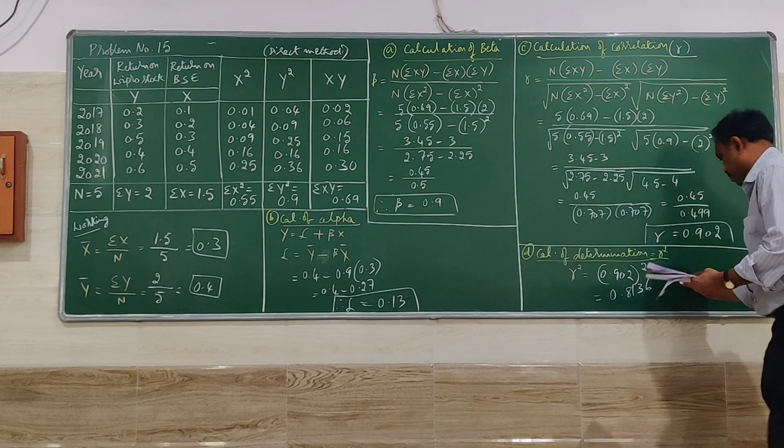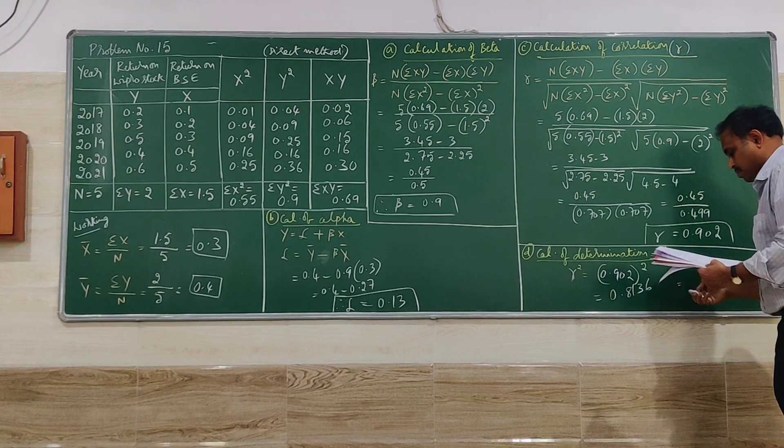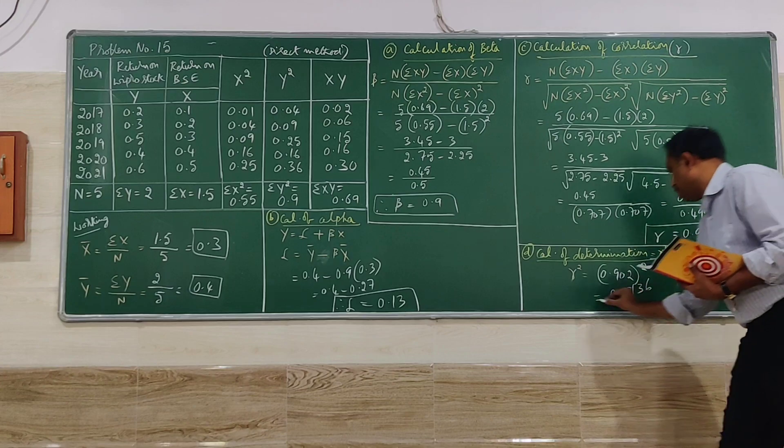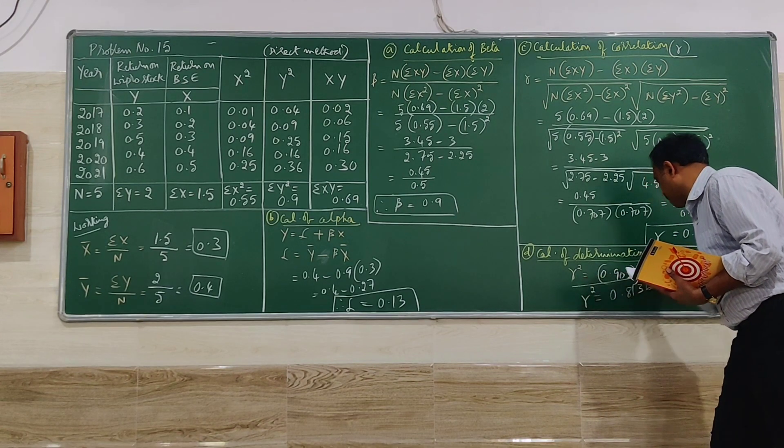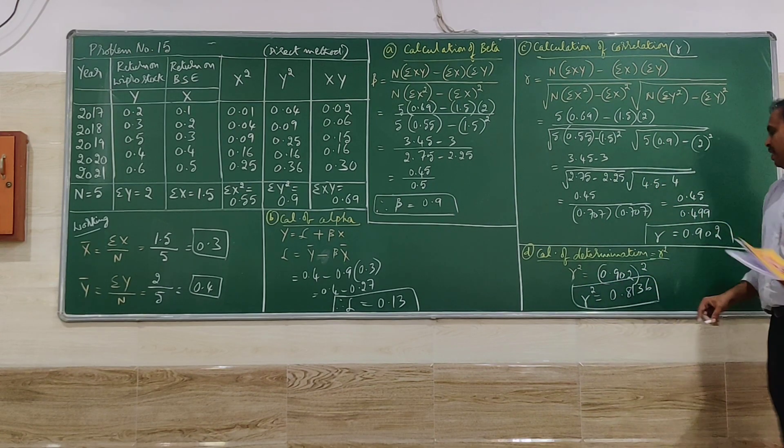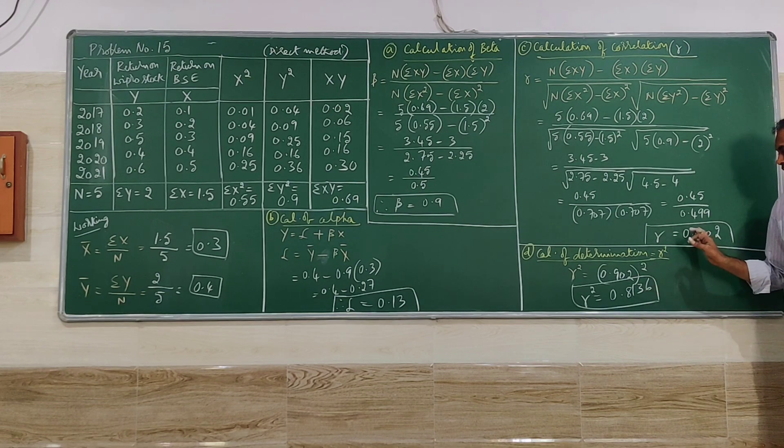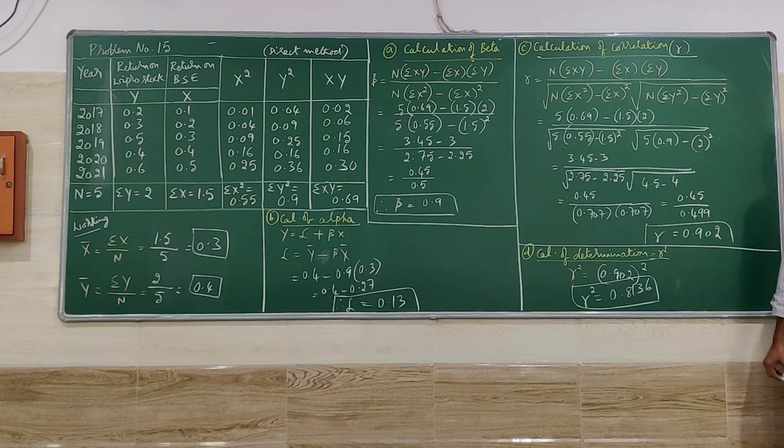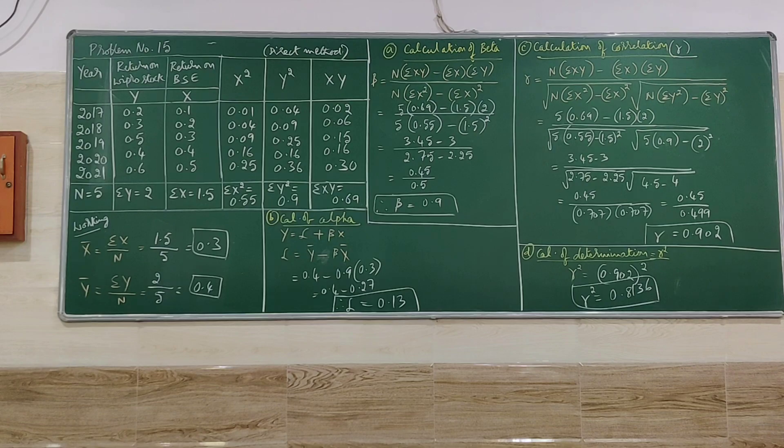So approximately, when you square, small variation may come, don't worry. So whatever all you have got, square that, that is the value of coefficient of determination. 0.81.